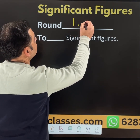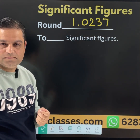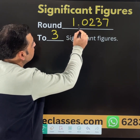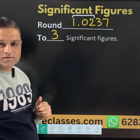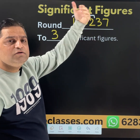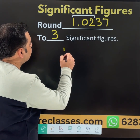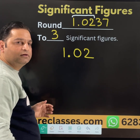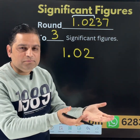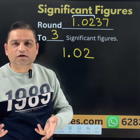Let us take another example. Suppose we have 1.0237 and we need to write 3 significant figures. Note that a zero which comes in between is also significant if it appears between any two digits. So 3 significant figures completes up to 1.02. We check the next number, which is 3 — less than 5 — so no change is required. The answer is 1.02. If you face any different situation while practicing, write in the comment box and we will definitely reply.